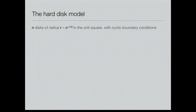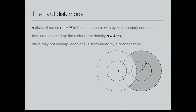Here's the notation we're going to use. We have N disks in the unit square with cyclic boundary conditions, so it's the unit torus. Each disk has radius 1 over root N times some constant. I'll use rho, the density, to mean the total area covered by all the disks. The disks may not overlap, so the centers of two disks may not be within a distance 2r. Each disk of radius r is surrounded by a danger zone of radius 2r in which the center of other disks may not be.